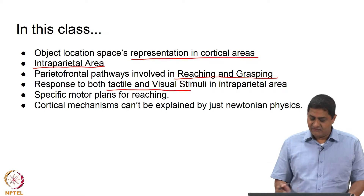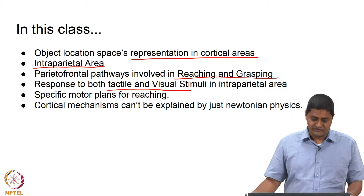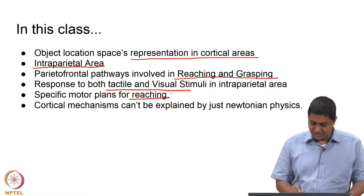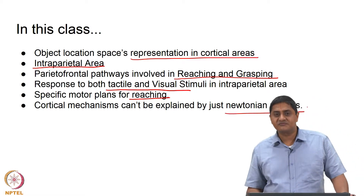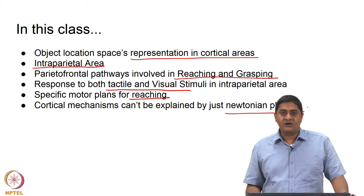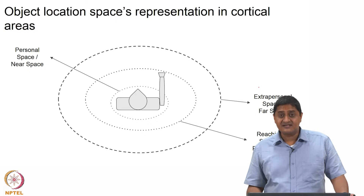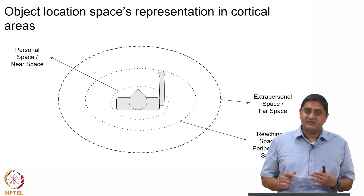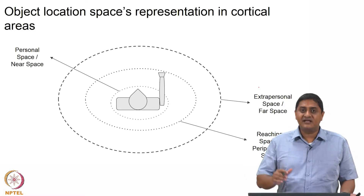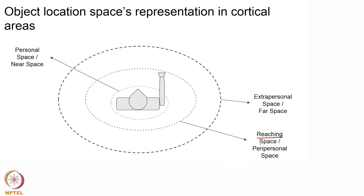For example, tactile and visual stimuli — in the intraparietal area there are neurons dedicated for different types of stimuli and motor plans for reaching. The idea that Newtonian physics alone cannot explain the cortical mechanisms underlying motor planning is related to the notion of near space. The space closest to my body is called near space, and the space I can reach by extending my limbs is called peripersonal space or reaching space.